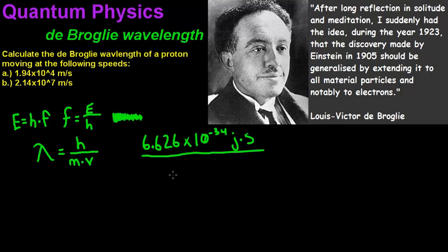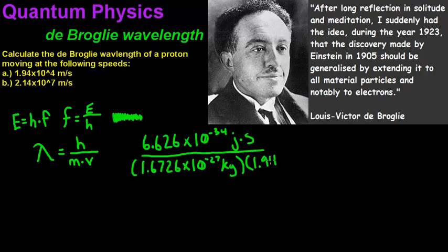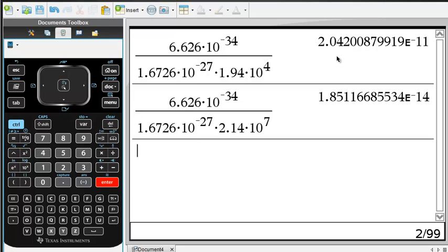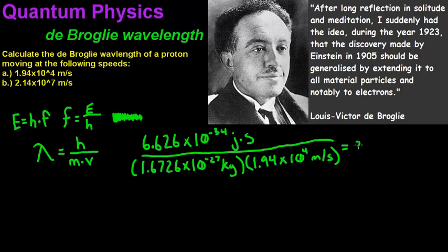Then you divide that by the mass of a proton, which is 1.6726 times 10 to the negative 27 kilograms, and multiply that by the known velocity, which is 1.94 times 10 to the 4th meters per second. When you do that, you get 2.04 times 10 to the negative 11th meters.